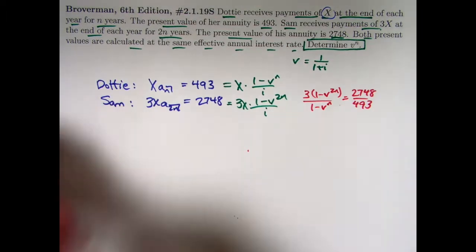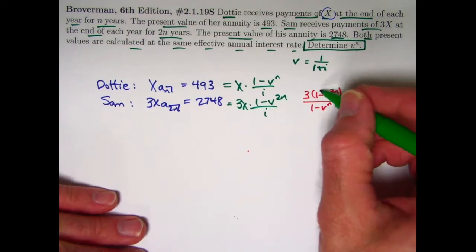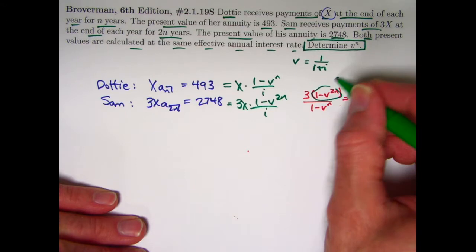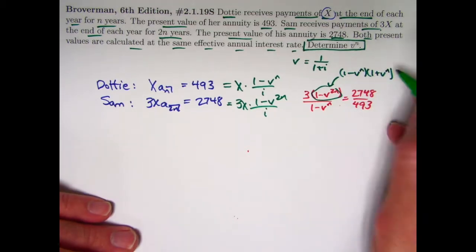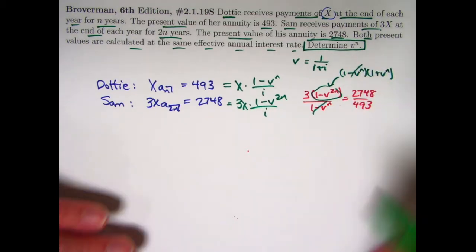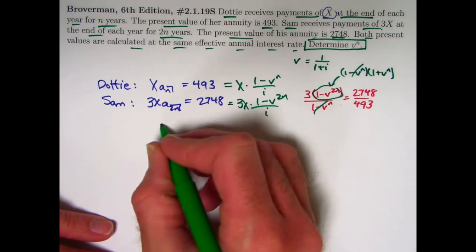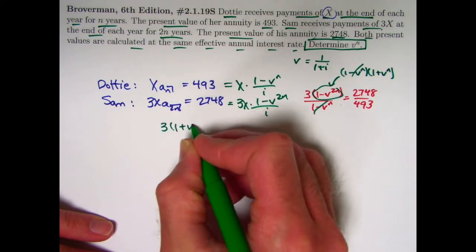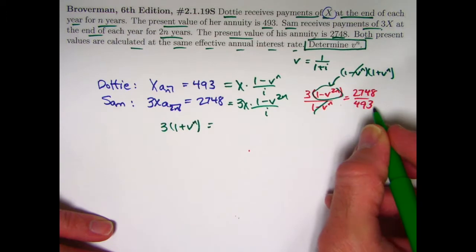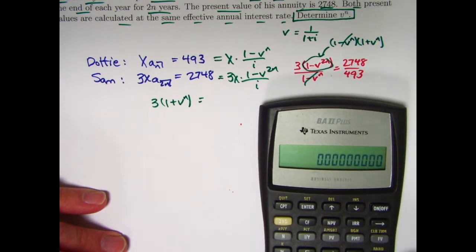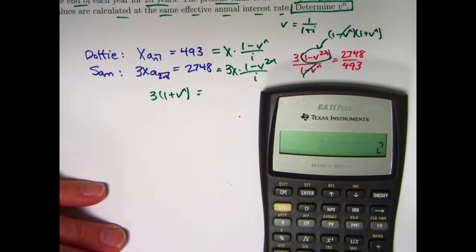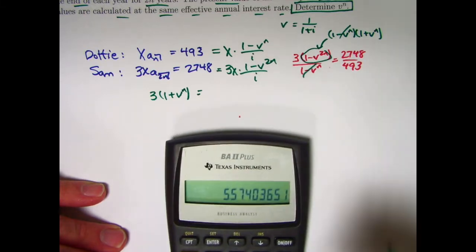Here we go. Here's your algebra skills coming into play. This is the difference of two squares. This can be factored as 1 minus v to the n times 1 plus v to the n. And then the 1 minus v to the n there can cancel with the one down there. So the equation now becomes 3 times 1 plus v to the n equals this ratio. Let's go ahead and find a decimal form for that. 2,748 divided by 493 is about 5.574.